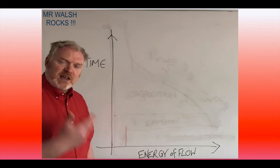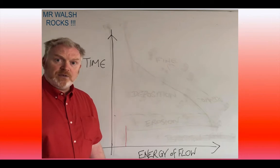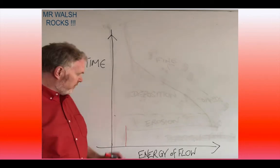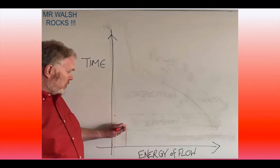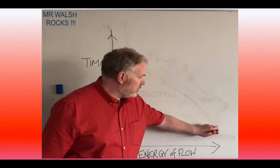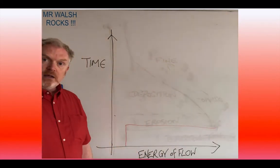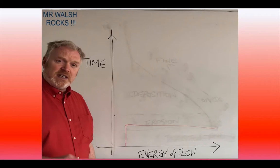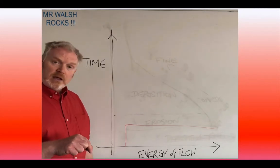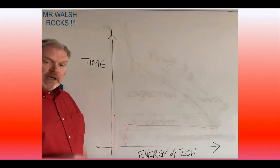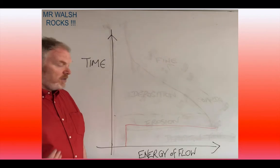Now the fastest part of a turbidity flow, fairly obviously, is going to be right at its front. So the energy level immediately a turbidity flow passes a particular point in the deep ocean environment is going to jump to a very high level.